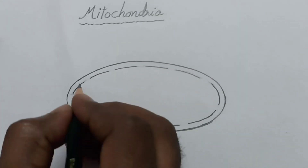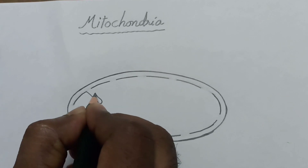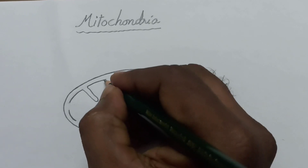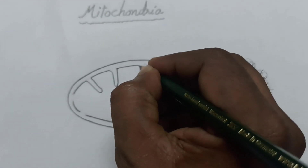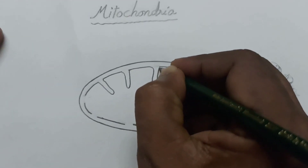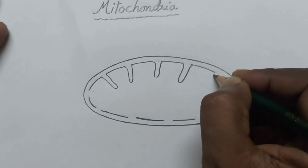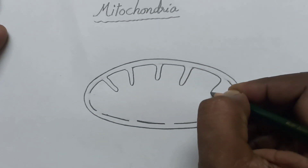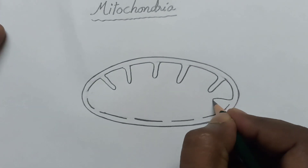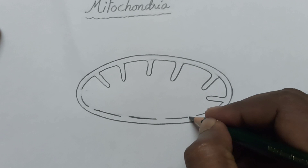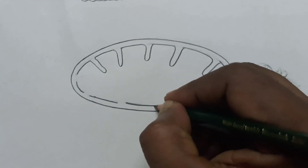You have to erase the leaving spaces. Now I am drawing these in-foldings. These are known as cristae. The in-foldings of the inner membrane are known as cristae.